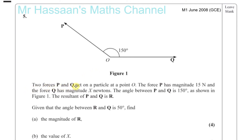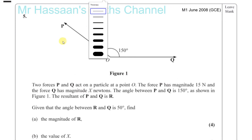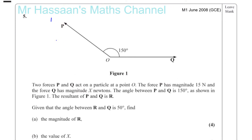Two forces P and Q act on a particle at point O. The force P has a magnitude of 15 Newtons and the force Q has a magnitude of X Newtons. The angle between P and Q is 150 degrees as shown in figure 1. The resultant of P and Q is R. Given that the angle between R and Q is 50 degrees, find the magnitude of R.